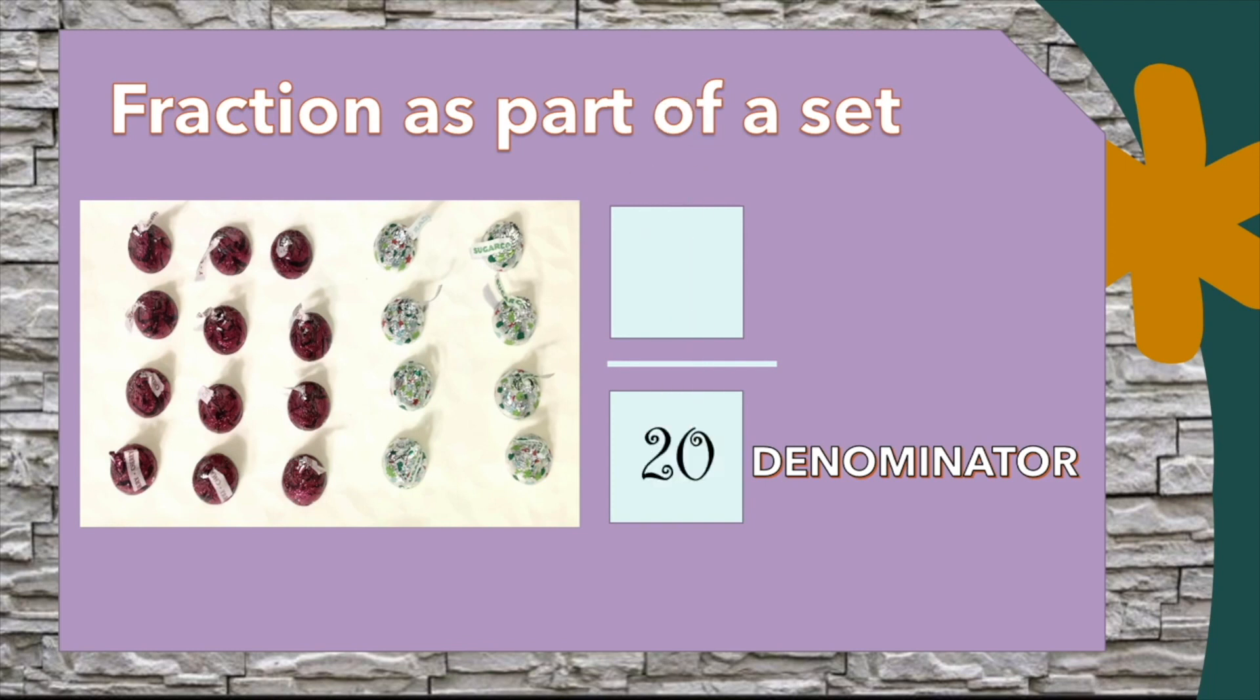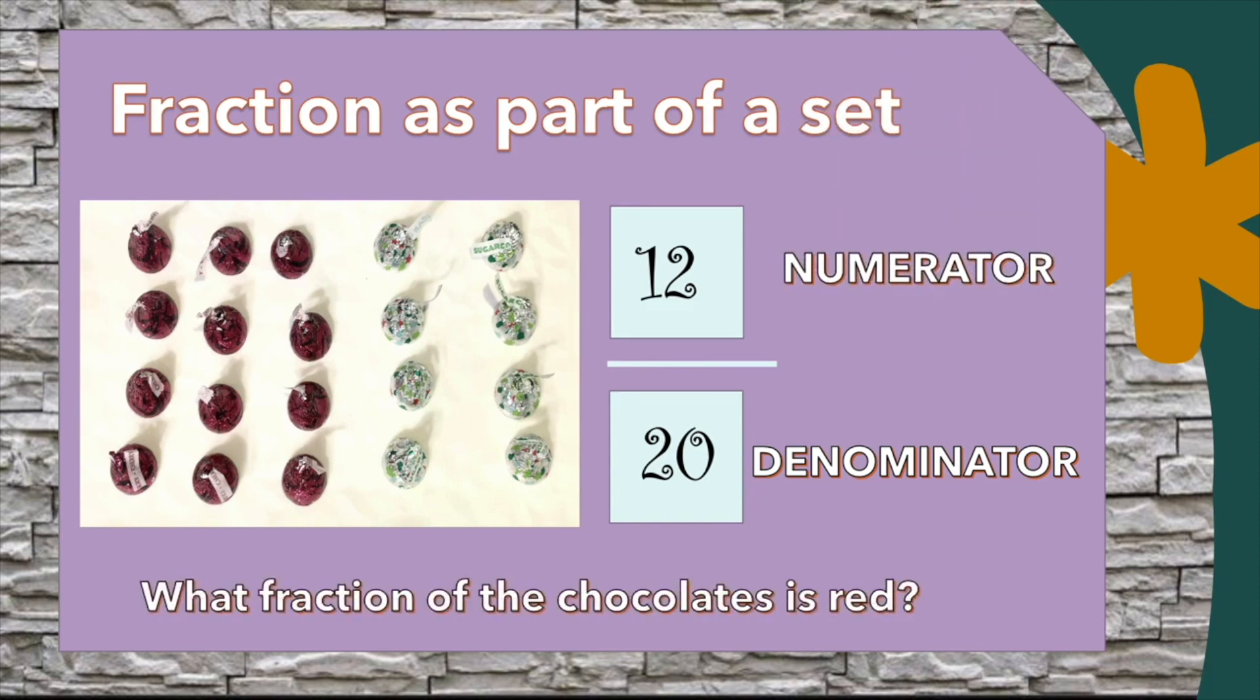The question is asking what fraction of the chocolates is red, so we're going to count the red chocolates in our set. We have 12. Twelve goes on the top, and this is our numerator. Now we can answer the question: what fraction of the chocolates is red? It's 12 over 20. In a different lesson we'll learn another way of writing 12 over 20.